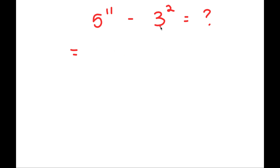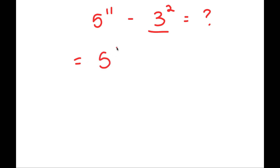So instead of doing that, I have another method to solve this. First, I'm actually just going to solve 3 squared, which is simple — it's 9. So this turns into 5 to the power of 11 minus 9.